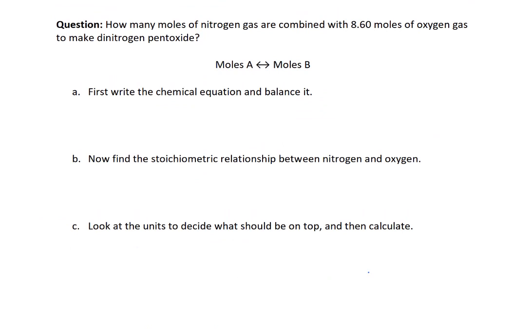So let's do a little bit of practice with that. So here's a new question. How many moles of nitrogen gas are combined with 8.60 moles of oxygen gas to make dinitrogen pentoxide? So what we're going to be doing is we're going to be going between moles of two different components. We're going to be going between moles of oxygen and moles of dinitrogen pentoxide. First, if you don't have a chemical equation, you have to balance it. And so, wait, I think I made a mistake.